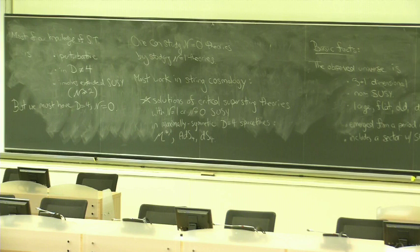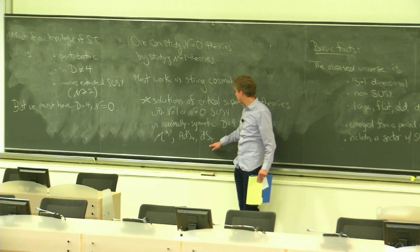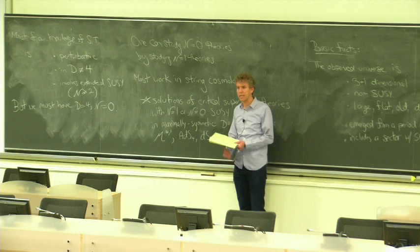And, of course, the maximally symmetric d equals 4 spacetimes are Minkowski space, AdS_4 and dS_4. Now, one of my goals in this first lecture is to lay out some occasionally unexamined assumptions and try and talk about what's really the bedrock on which we can build a complete understanding, as a starting point at least. I claim this is our most secure starting point at present for understanding cosmology and string theory. So we're going to go through all of these modifiers that are in here, but the claim is that most of the work in the subject essentially deals with or seeks or makes use of solutions of critical superstring theories that have n equals 1 or n equals 0 supersymmetry in 4 dimensions in space times that are maximally symmetric.